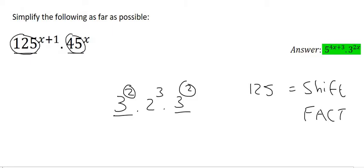And so what you'll find is that 125 is the same as 5 to the power of 3. So we do that, and then we open up a bracket, and we put the x plus 1. And then 45 is the same as 3 squared times by 5, and then we put the x on the outside like that.